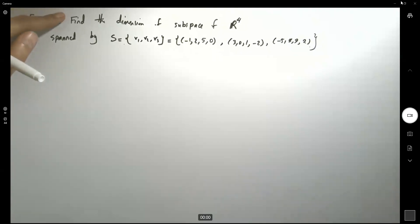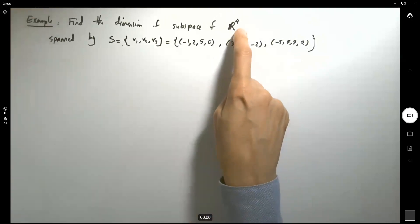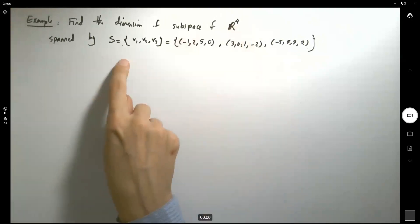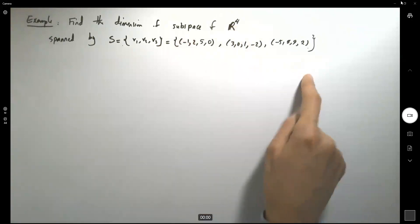The question says, find the dimension of a subspace of the Euclidean space of dimension 4 spanned by this set including three vectors v1, v2, v3, which is written here for you.